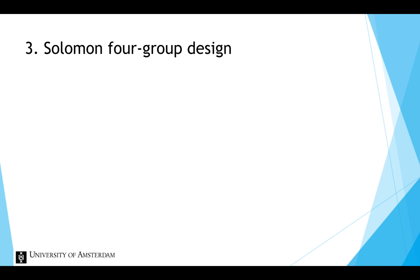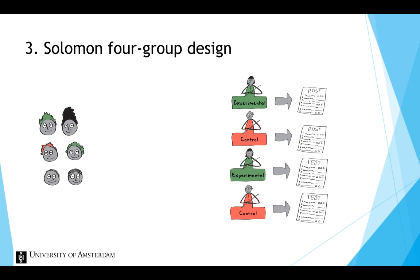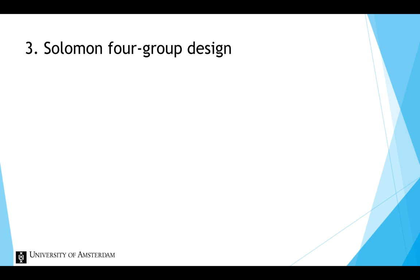The third design is the Solomon four-group design. This design combines the first two designs. In total, there are four groups. The experimental and control condition are run twice, once with a pretest and once without. With this design, a researcher can test whether the post-test differences were caused by the treatment, the pretest, or a combination of treatment and pretest.